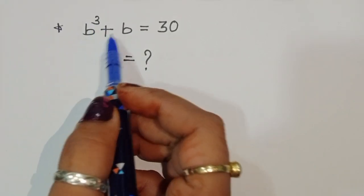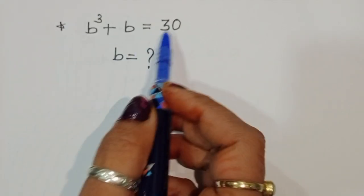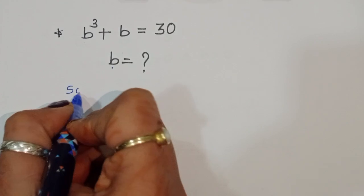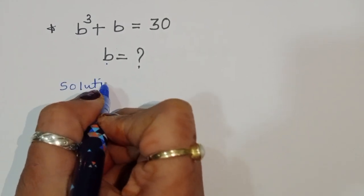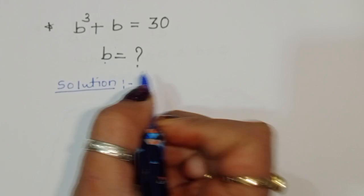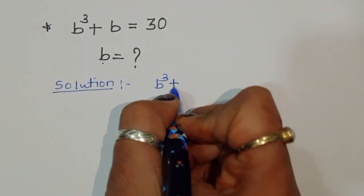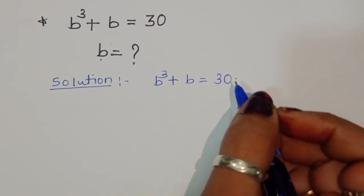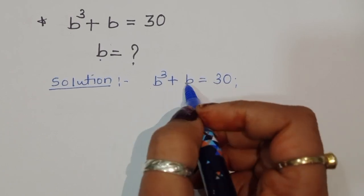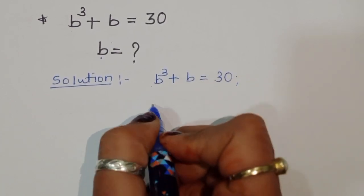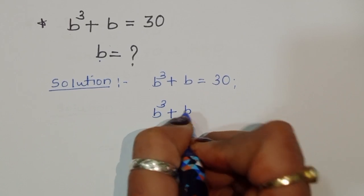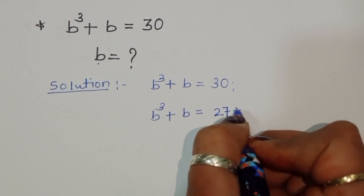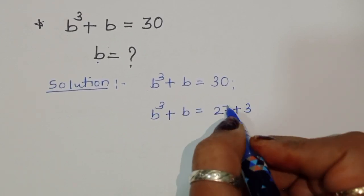The question is: given b³ + b = 30, we have to find the value of b. Let's see the solution. b³ + b = 30 is the given question. We can do one thing — we can convert this: b³ + b = 30, and we can write 30 as 27 plus 3.